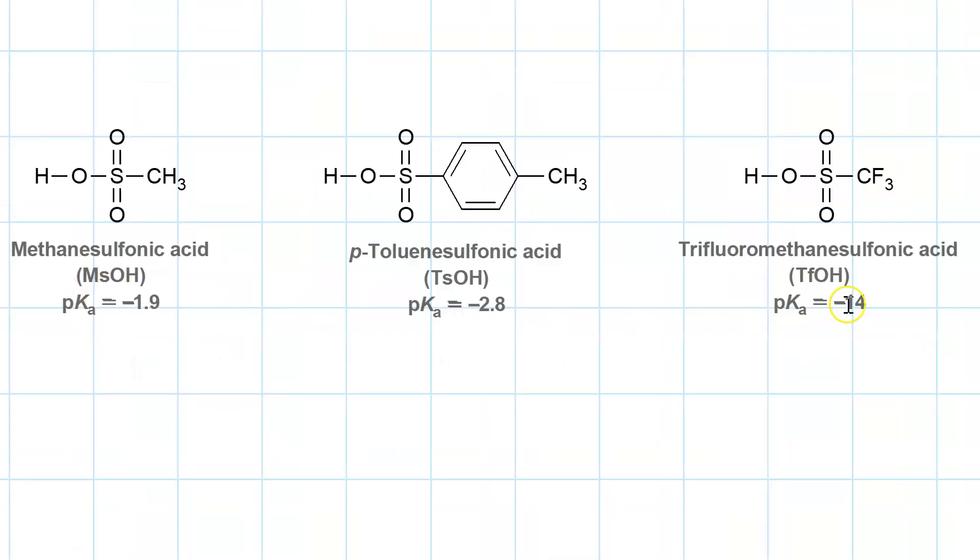These are the conjugate acids, by the way. The conjugate acid of mesolate is methane sulfonic acid. The conjugate acid of tosylate is paratoluene sulfonic acid. And the conjugate acid of triflate is trifluoromethane sulfonic acid, with a pKa of negative 14, a super acid. So the conjugate bases of these are super weak bases, and therefore excellent leaving groups.